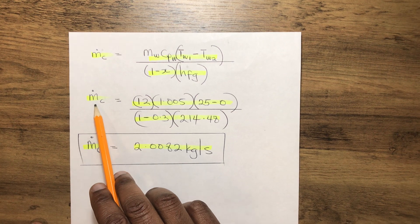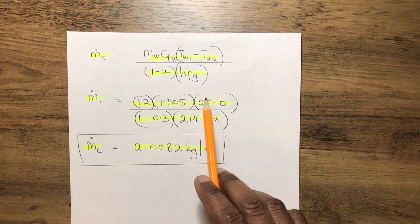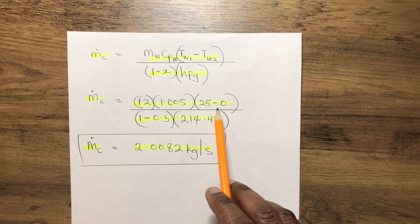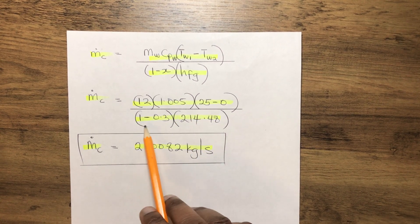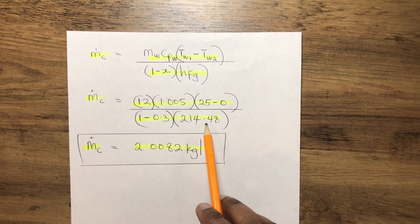So therefore, our MC becomes 12 multiplied by 1.005 times 25 minus 0, everything over 1 minus 0.3 into bracket 214.48.